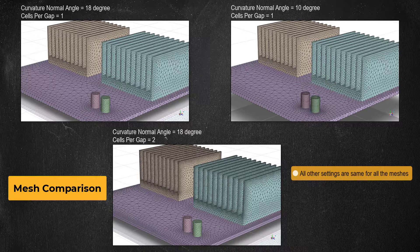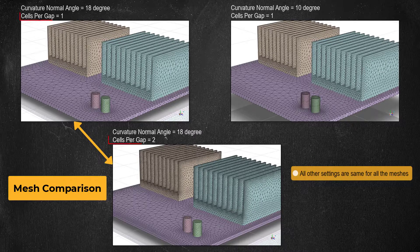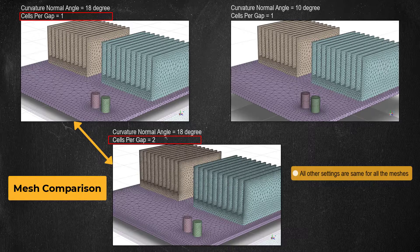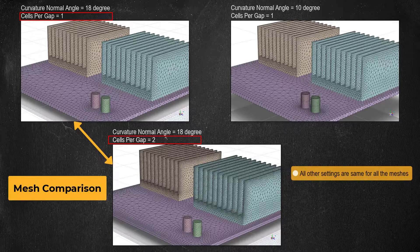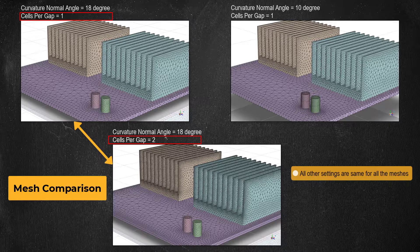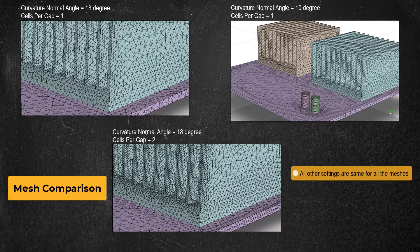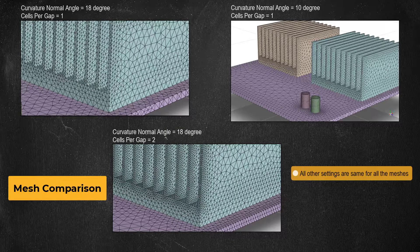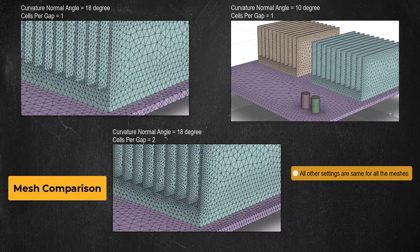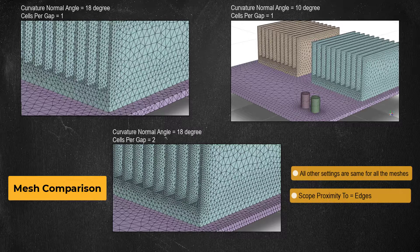The inputs for the mesh on the bottom are the same as the mesh on the top left except the cells per gap input. For the mesh on the top left this value is set to 1, which is the default, and for the mesh on the bottom this value is set to 2. It is clear how increasing the cells per gap value increases the number of cells that are filled in gaps between geometrical features.